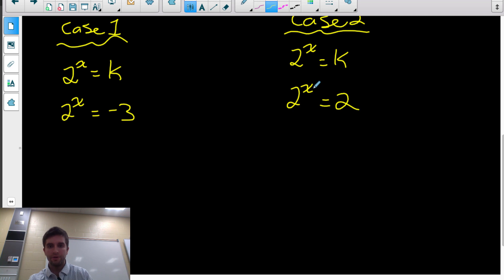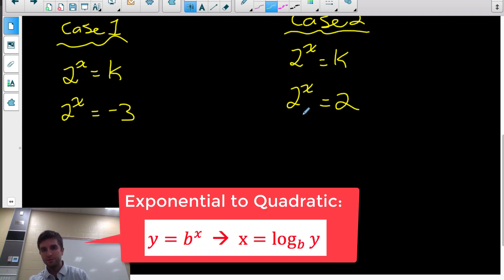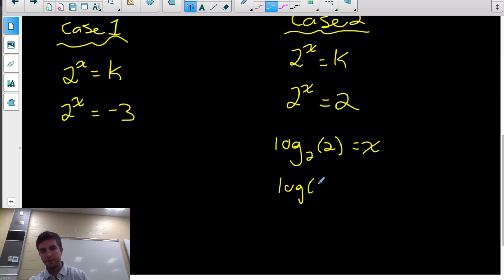But it's not always going to work out this nicely. You may want to solve an exponential equation of this form. You may want to convert it to logarithmic form. So log base 2 of 2 equals x. And then you could type that on your calculator or use your change of base formula, log 2 over log 2.